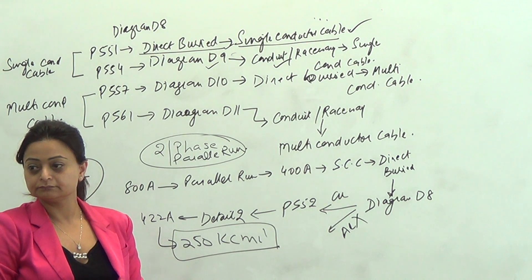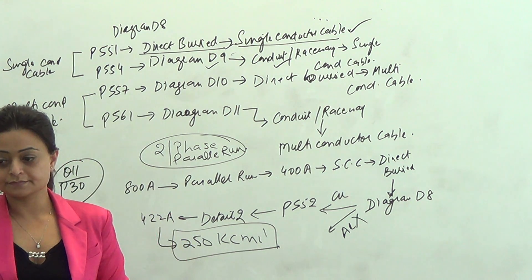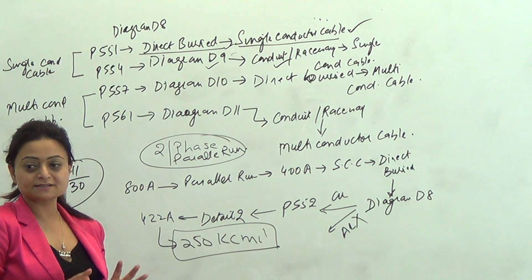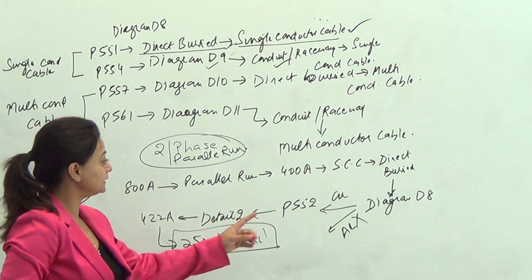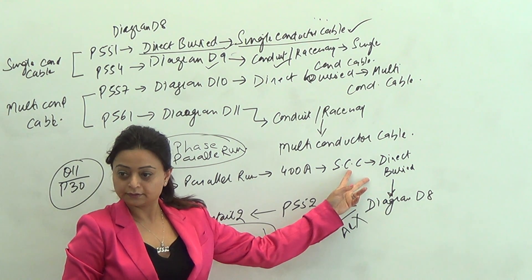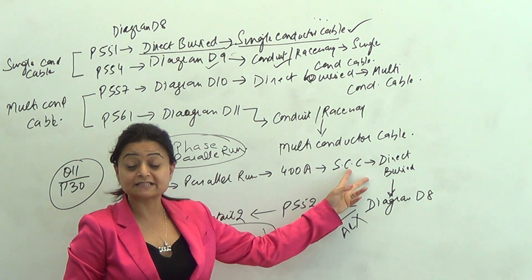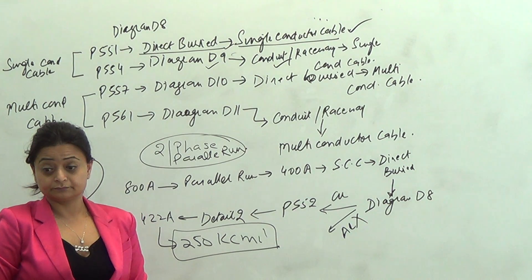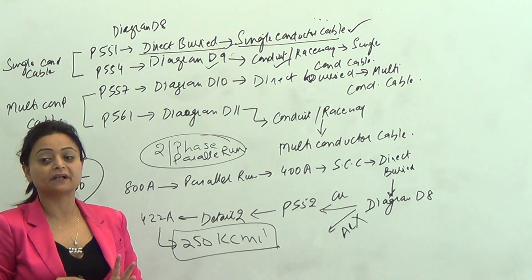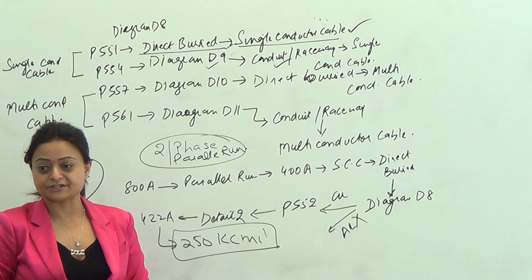Why were you guys having trouble? Are you clear now? Non-continuous doesn't mean anything here. Single conductor, direct buried, direct buried — diagram D8, detail 2, because parallel run. It says 800 amps is the total load but I'm doing a parallel run, so three key keywords in this question.